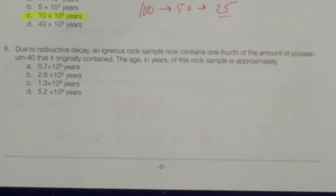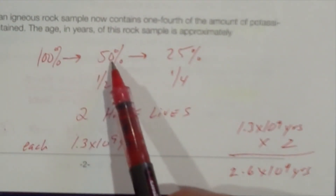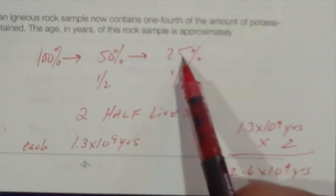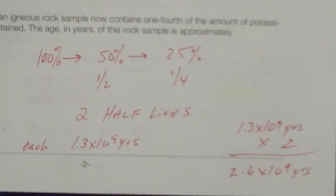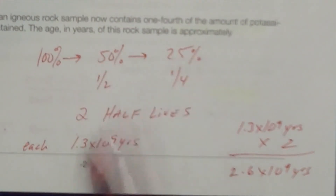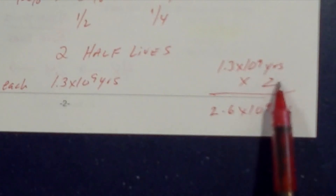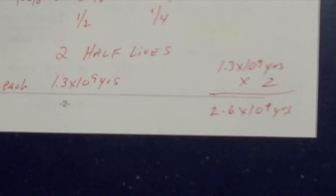Number six: due to radioactive decay, an igneous rock sample now contains one-fourth of the amount of potassium-40 that it originally contained. The age in years of this rock sample is approximately: if I started off with 100%, after one half-life I'd have 50%, and after two half-lives I'd have 25%, or a quarter of the original. So this igneous rock has gone through two half-lives. Each half-life is 1.3 × 10⁹ years, so 1.3 × 10⁹ × 2 gives me 2.6 × 10⁹ years.